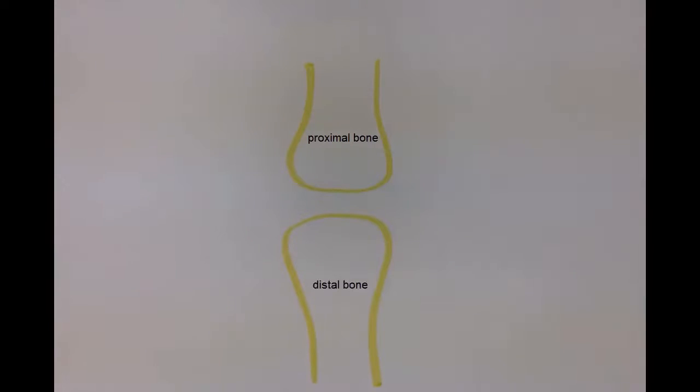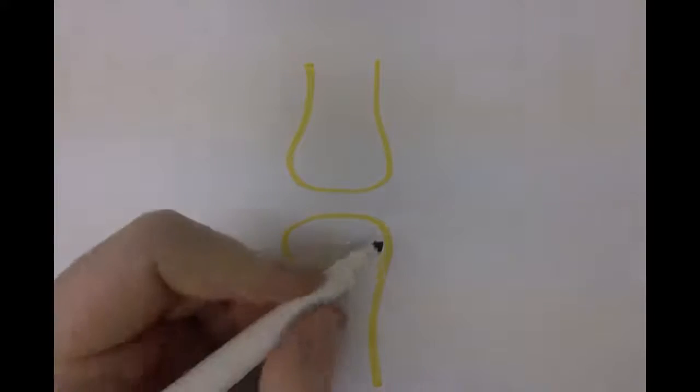You can see that in a synovial joint these bones have a space in between them, they do not touch. This is partly what allows for so much movement at synovial joints.